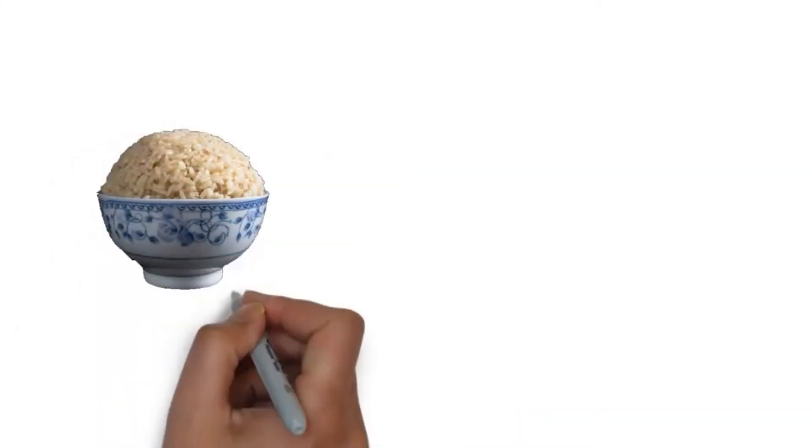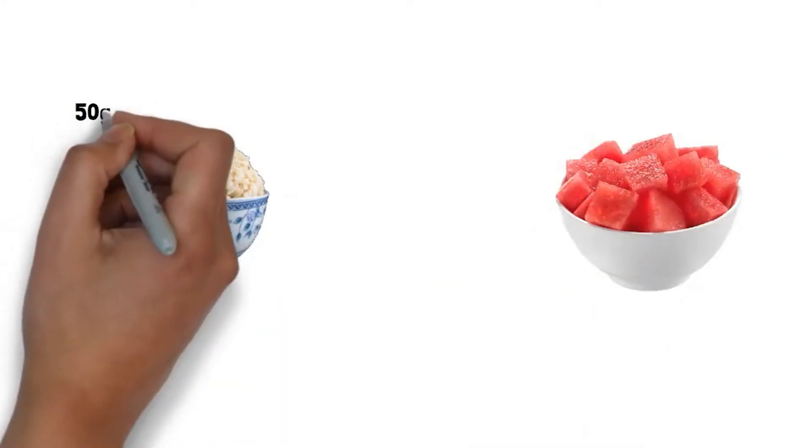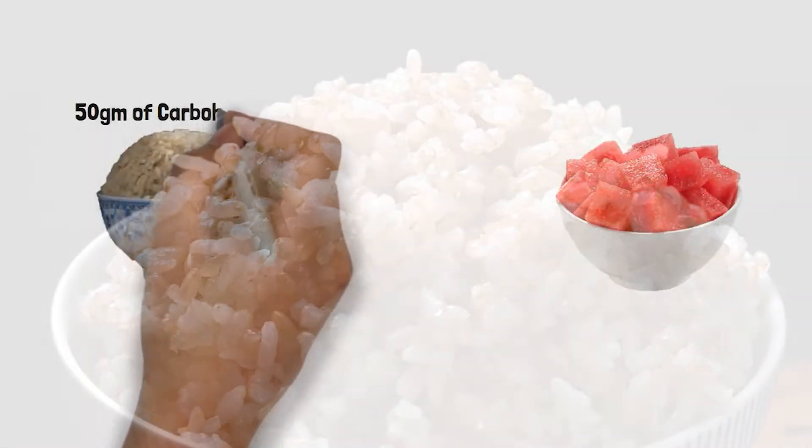Certainly there are some foods which can provide you 50 grams of carbohydrate in just a handful of a serving, whereas there are certain foods where you have to eat multiple cups to get the same 50 grams of carbohydrate. The classic example is brown rice and watermelon.